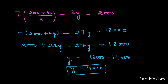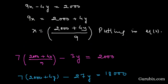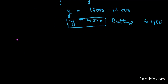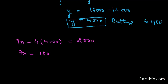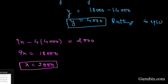Now we shall use this value of y to find the value of x by substituting back into equation number 1: 9x minus 4y equals 2000. With y equals 4000, we get 9x minus 16000 equals 2000. Therefore, 9x equals 18000, and thus x equals 2000.